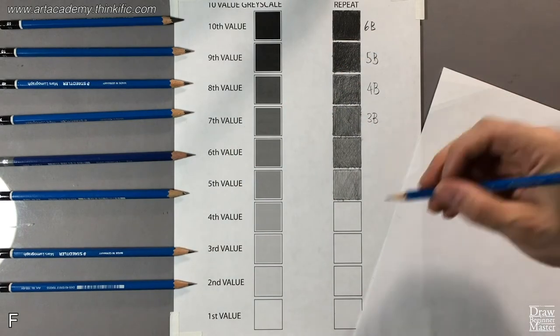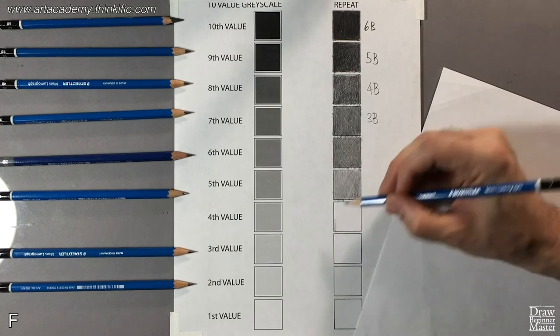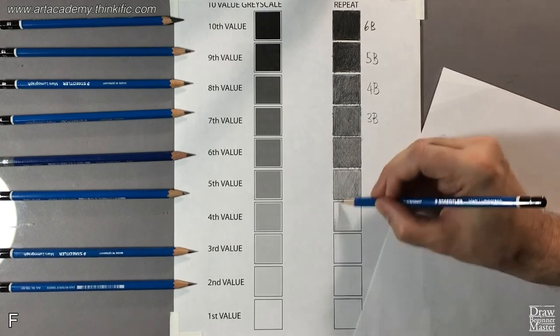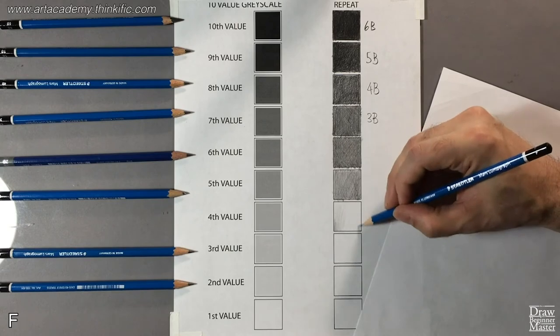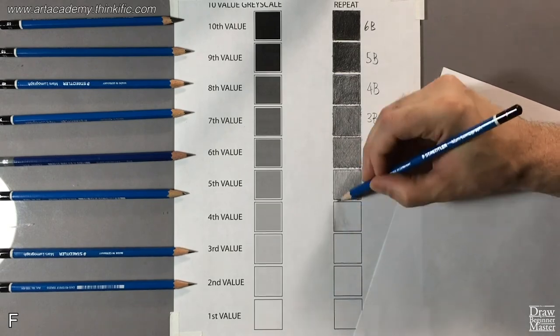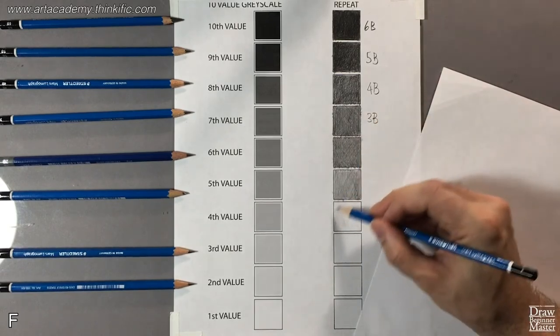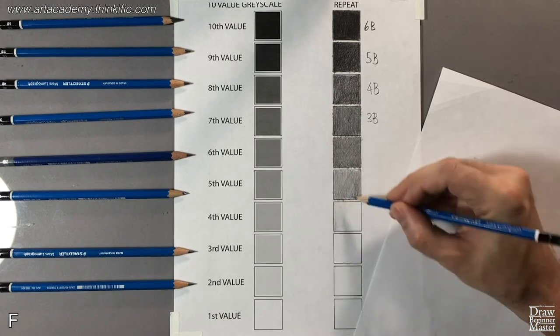For 4th value, I'll move to the F lead pencil. Again, it's a very hard lead, so I'm going to crosshatch the value in. Harder leads make finer, lighter lines and leave no grain. The more passes you make over the square, the more consistent and solid the value will be.